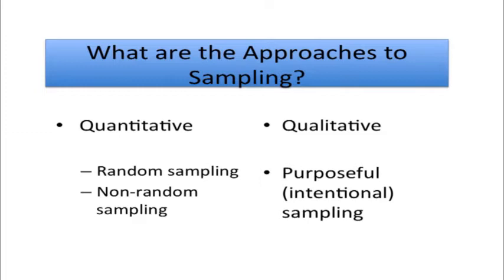We also need to recognize that sampling differs between quantitative and qualitative approaches. In quantitative research, we try to randomly sample participants — selecting participants representative of some larger population. Sometimes we use non-random convenience sampling, such as working with all the students in a particular class. In qualitative research, there's a different type called purposeful or intentional sampling, where the goal is not to draw a representative sample but to draw a sample that best helps us understand the research problem.